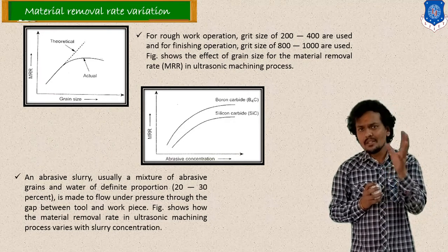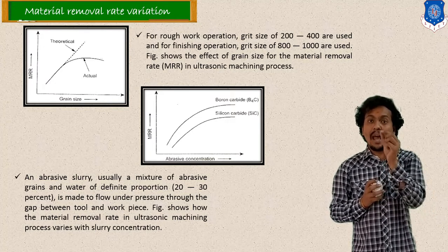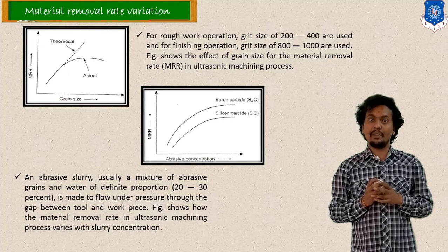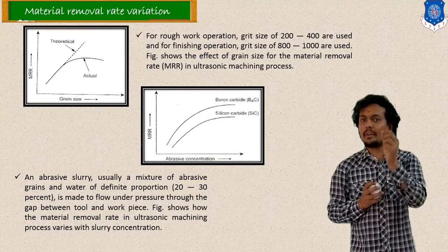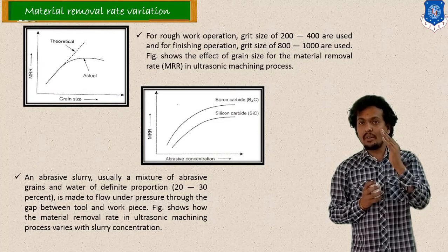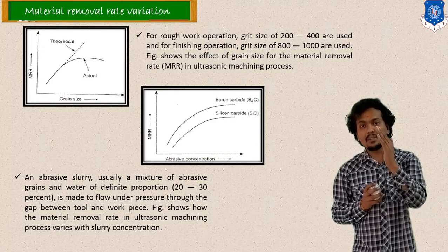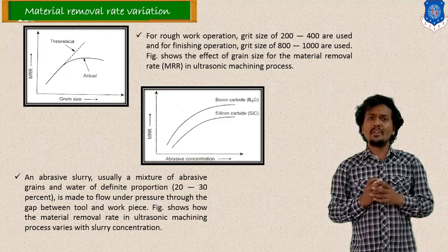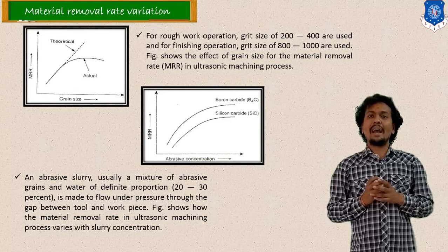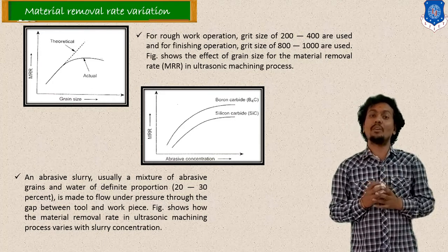Let us start discussion on variation of material removal rate with process parameters. So your abrasive particle size is very important. In the first graph, here I mentioned the variation of material removal rate with grain size of your abrasive slurry. So in the initial stage, your material removal rate with grain size will increase. But after some time, it will start decreasing. Various grit sizes like 200, 400 grit are available. Generally, higher grit size will be used for finishing operation. So here I mentioned in this graph the variation with your grain size.